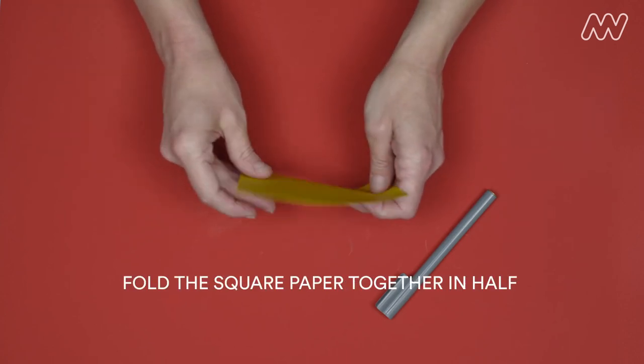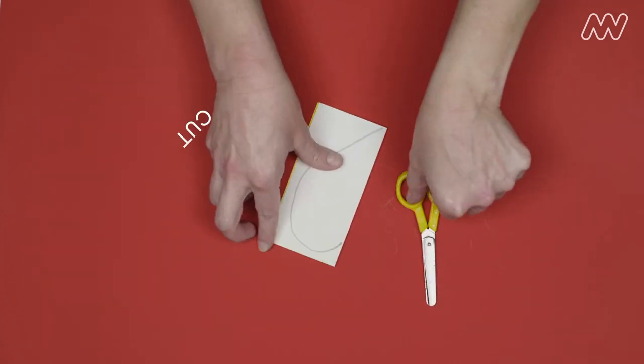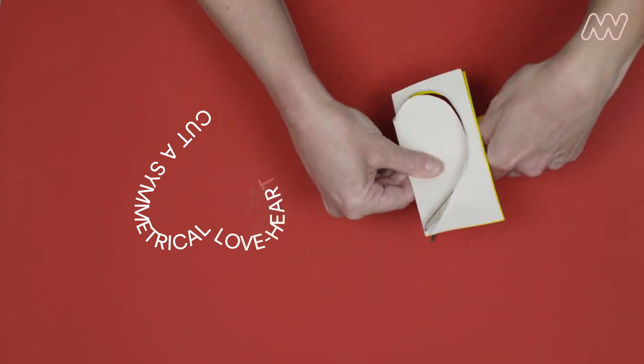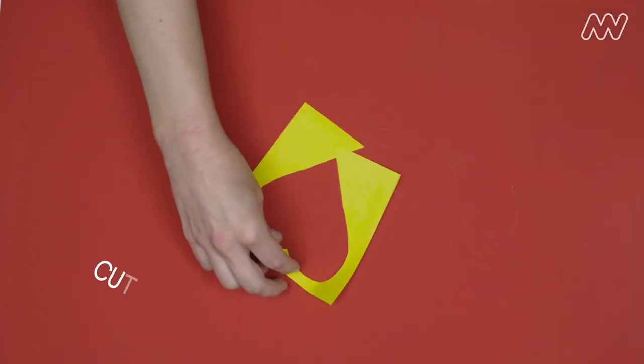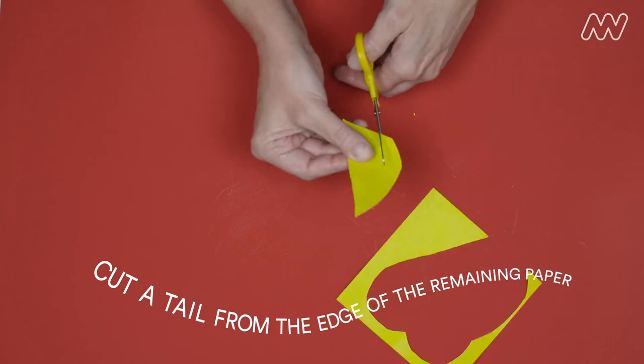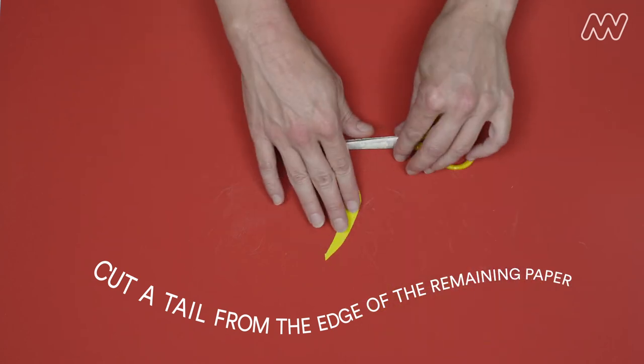Step 1. Fold the square paper together in half and cut a symmetrical love heart shape. Step 2. Cut a tail from the edge of the remaining paper.